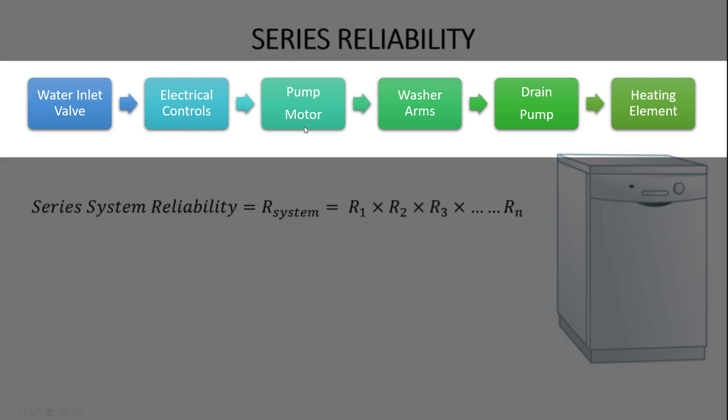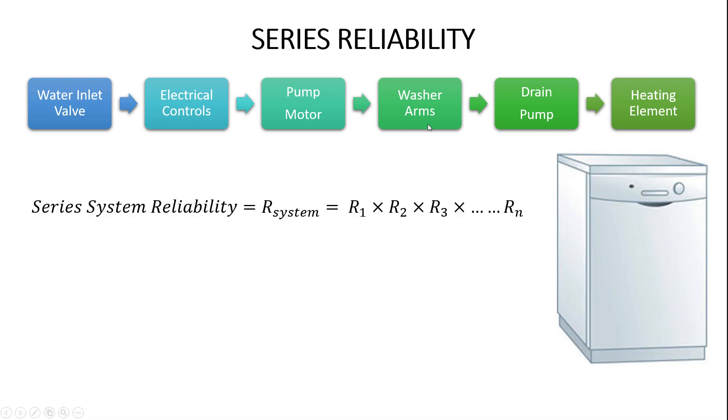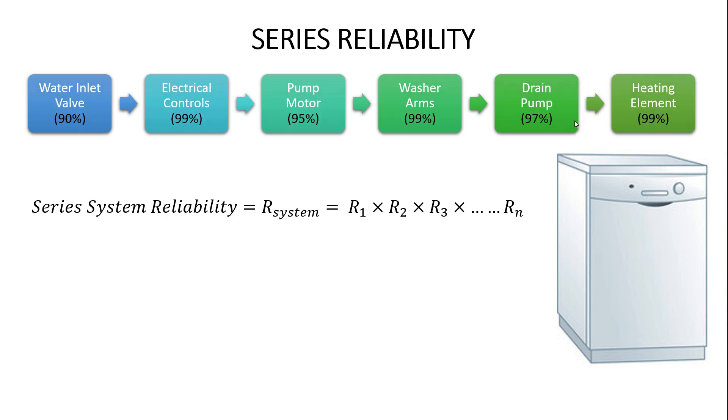Your inlet valve, your electrical controls, your pump motor, your washer arm, all of these different elements or subsystems within the dishwasher, all have to work in a linear fashion for the entire dishwasher to work. If any one of these subsystems were to stop working, the dishwasher wouldn't work properly. And that's why they're in series with each other. And so what we can do is let's say that we've done a reliability testing.